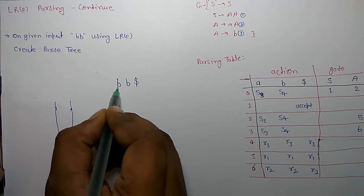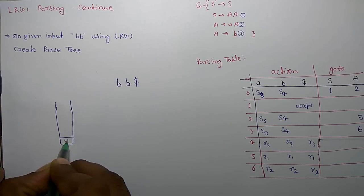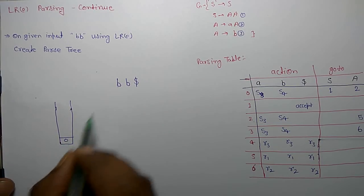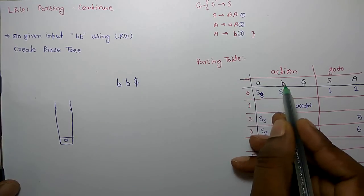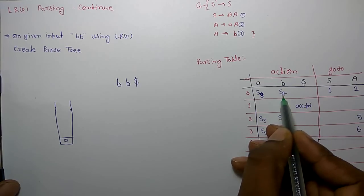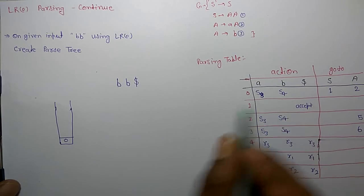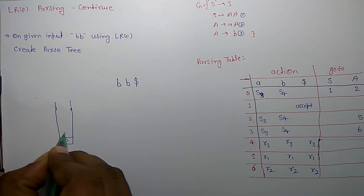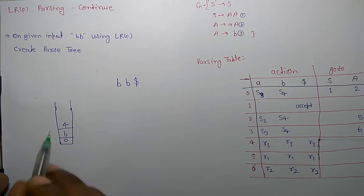Start reading the symbol. For that, the stack will start from state zero. On zero state, we start with B. When we read B on zero state, then we shift to state 4. We shift B and the state becomes 4.